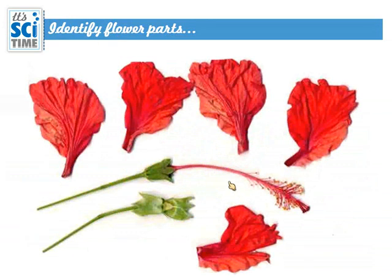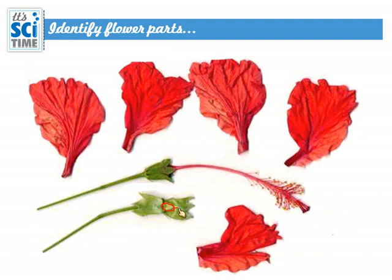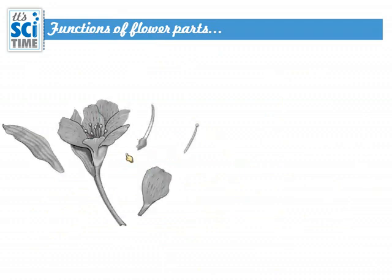Let's identify the parts in a real flower. The colorful petals are clearly visible, and the green ones are the sepals. The ovary, style, and stigma form the female part, and the filaments and anthers are also visible. This is the shoe flower or hibiscus flower — that's how we identify the parts of a real flower.